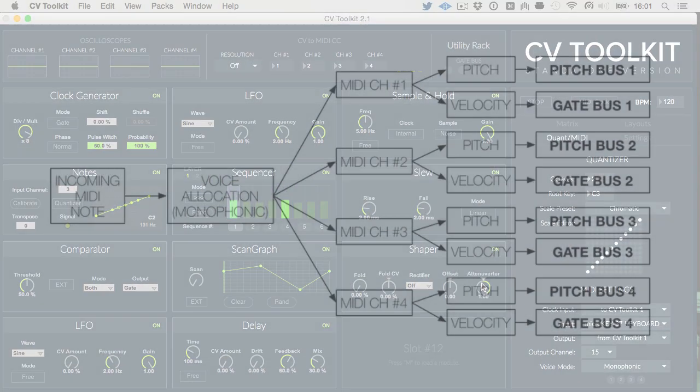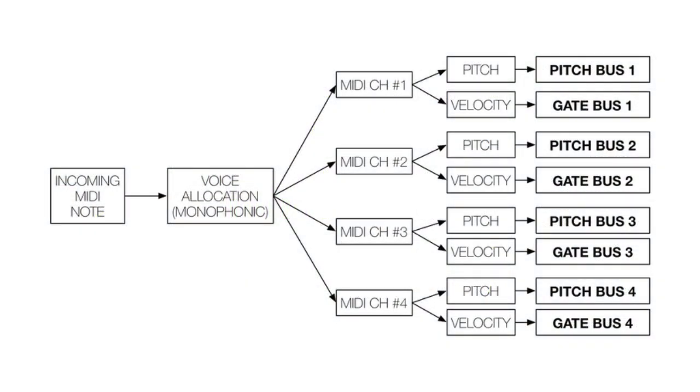The monophonic mode basically receives MIDI notes from your controller, and routes the pitch information to PitchBus number 1, and the MIDI velocity to GateBus number 1.